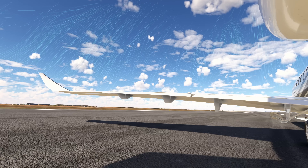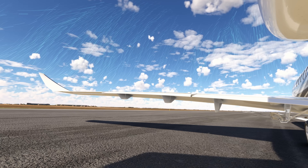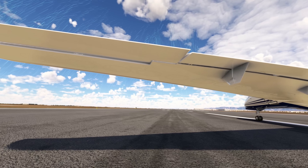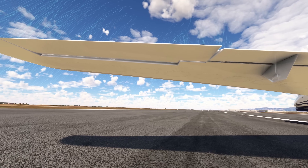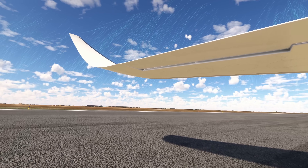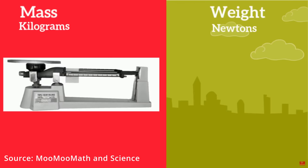For a wing to produce lift, it must apply an equal and opposite force on something else, and the only thing that a wing has to work with is the air that flows around it. In other words, if you're using air to lift a 50,000 pound aircraft, you're going to have to displace an equivalent amount of air downwards.